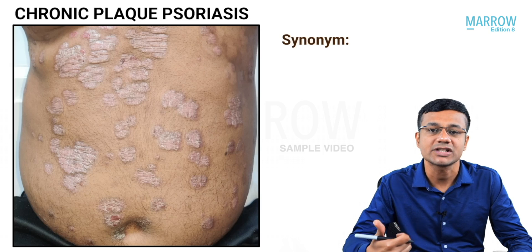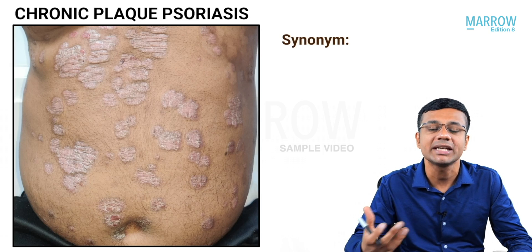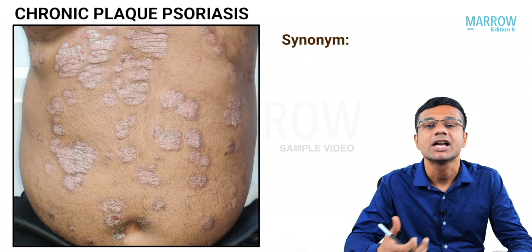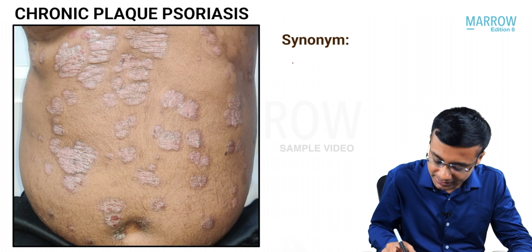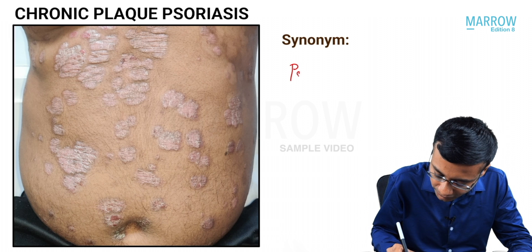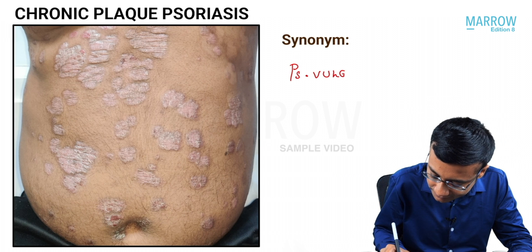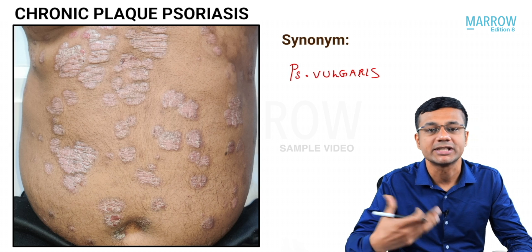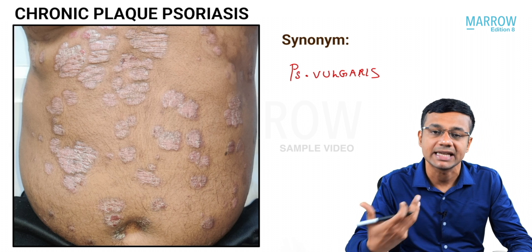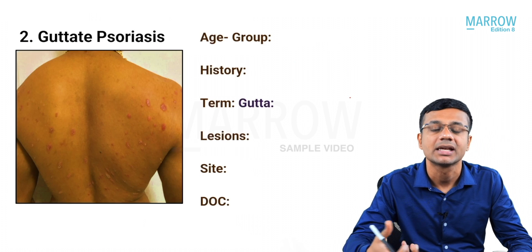Let us go to the different clinical types of psoriasis. The first one being chronic plaque psoriasis, also referred to as psoriasis vulgaris. We will move on to the description of the lesions later on.